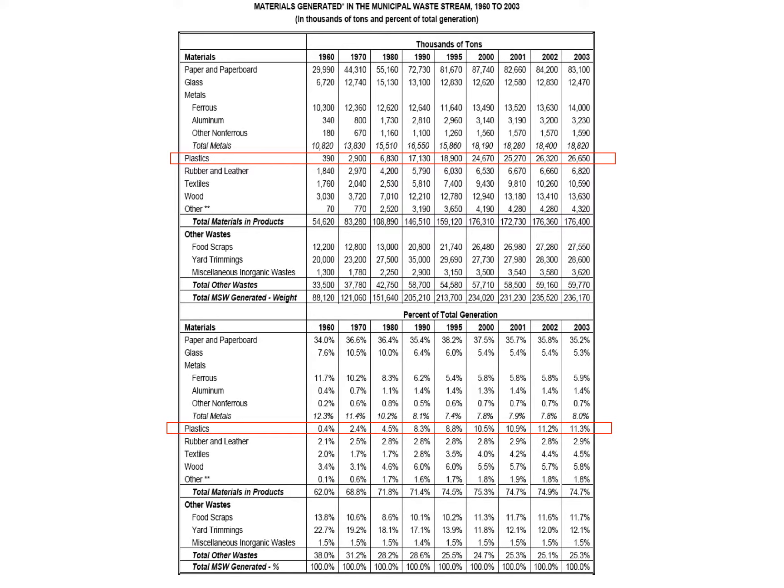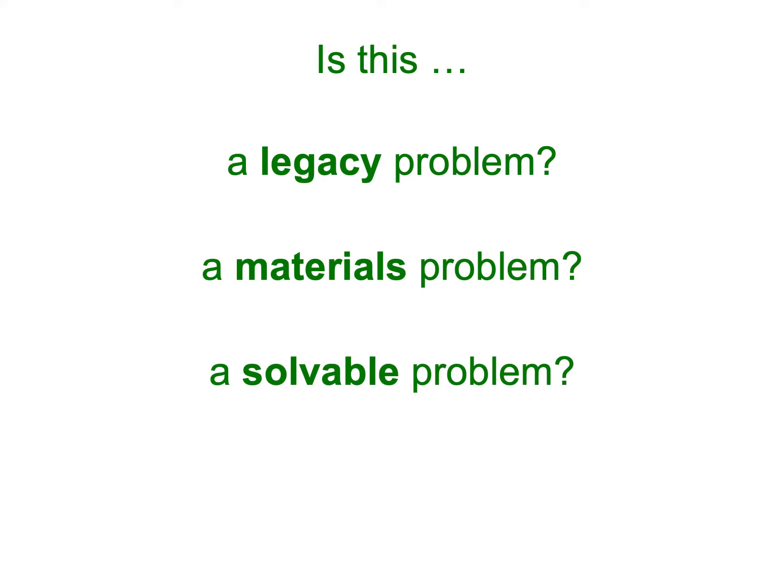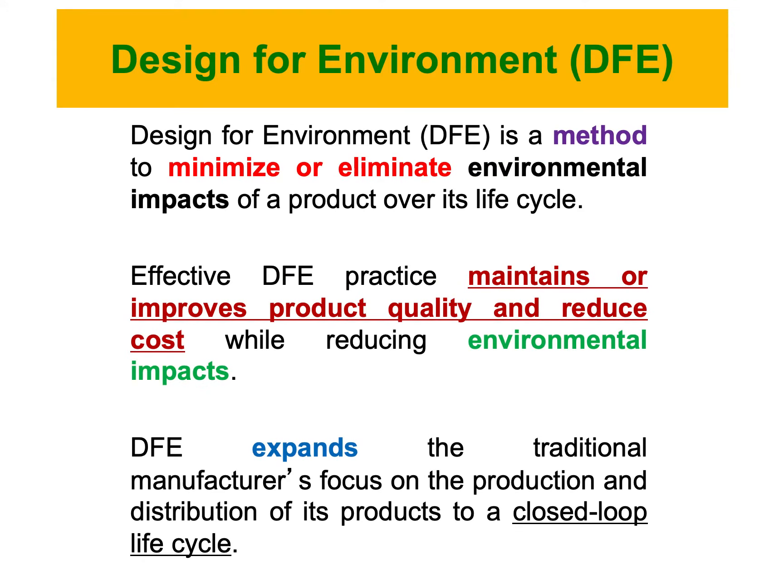Is this a legacy problem? Yes. Is it a material problem? Sure. Is it a solvable problem? Yes. We need to be smart about how to approach this early in our product design and development process, in order to utilize available processes and methods to reduce our footprint on the environment. Design for environment is a method to minimize or eliminate environmental impact of products over their life cycle.